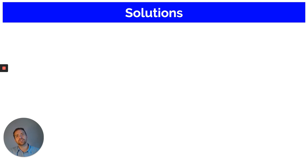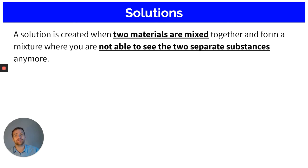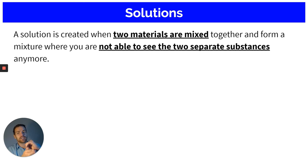Okay, I remember we did discuss solutions — a mixture that looks like a pure substance where two or more substances are mixed together. I want to start this video off by saying: do not use the word 'disappears' in science. It is incorrect. When we're talking about solutions, what happens is it dissolves. A solution is created when two materials are mixed together and form a mixture where you are not able to see the two separate substances anymore.